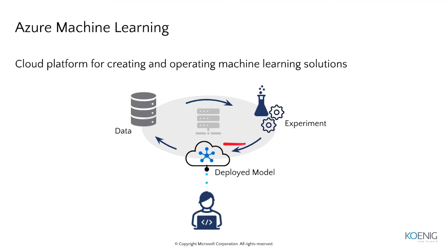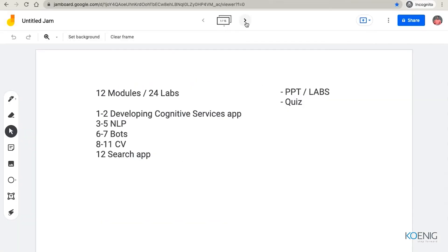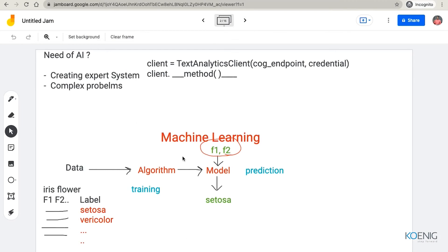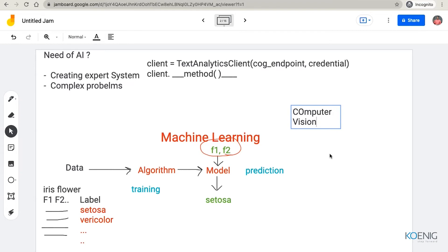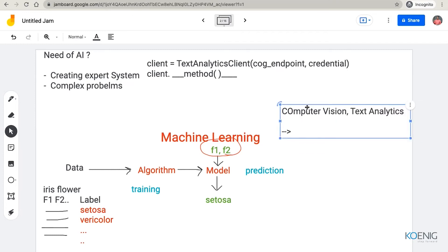After that, we discussed some more services for the different tasks. For machine learning, you provide data to the algorithm and then you make the model, with various workloads available on this service. But for developing those AI solutions — for example, if I want to go with computer vision or text analytics — I need a specific service. What was the name of this? The cognitive service.